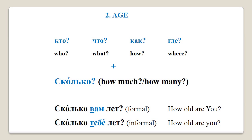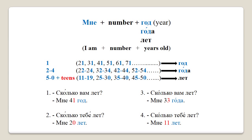In the first question, вам is a form of вы — a formal way to address somebody. In the second question, тебе is a form of ты — an informal way to address somebody. лет here stands for 'years.' Now there is a certain pattern that we have to keep in mind when talking about age, or any construction that involves numbers in Russian, such as telling time or talking about prices. To answer the question, to talk about your age, we're going to use мне instead of я.